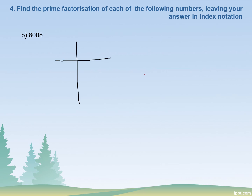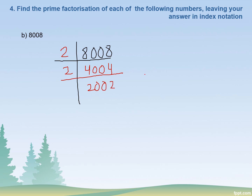Coming to part b, we have to do the prime factorization of 8008. Obviously we will start from 2, as at the end of this number there is 8 and 8 is divisible by 2. We divide repeatedly by 2: 8008 ÷ 2 = 4004, ÷ 2 = 2002, ÷ 2 = 1001. Now we have received 1001.